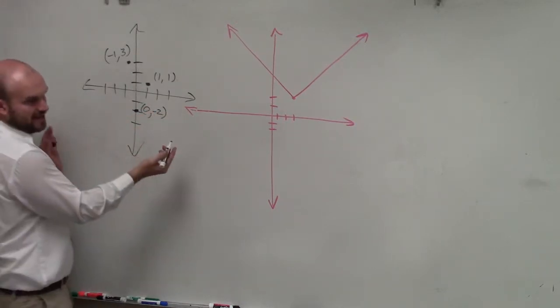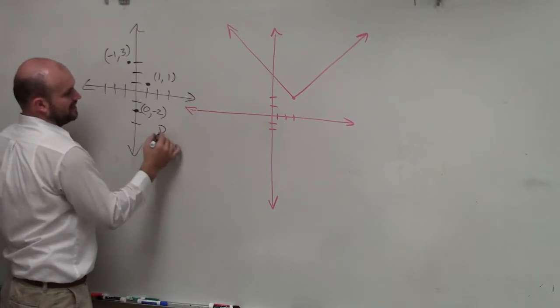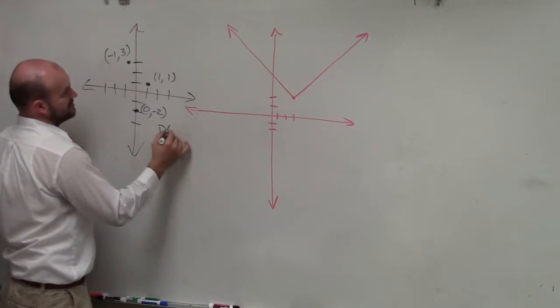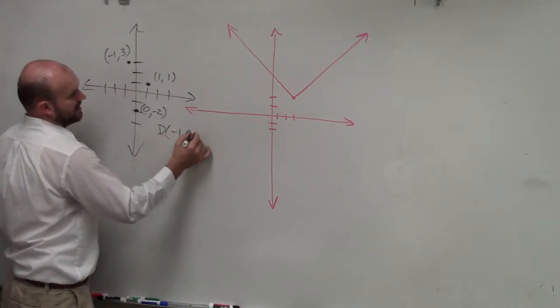So the domain is all the x values, right? So the domain, in this example, is negative 1, 0, and 1.